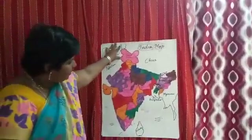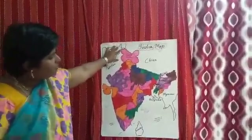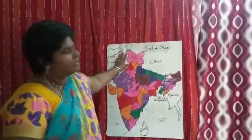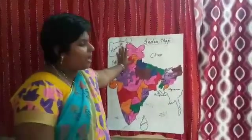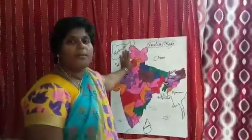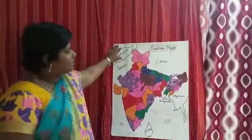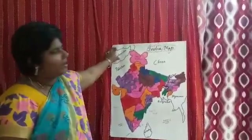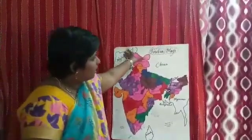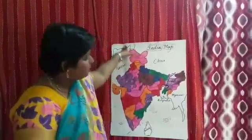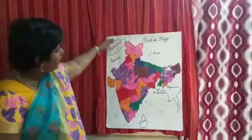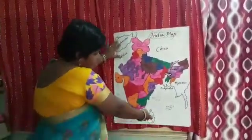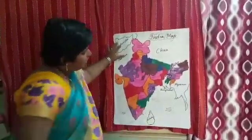And we have so many neighboring countries. We are having the boundaries together with them — such countries are called neighboring countries. They are China, Bhutan, Myanmar, Bangladesh, Afghanistan, Pakistan, and Sri Lanka.